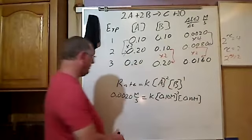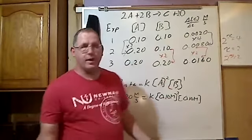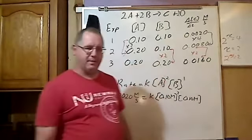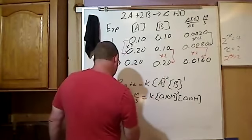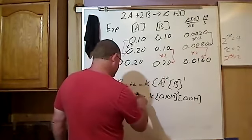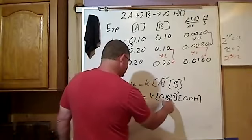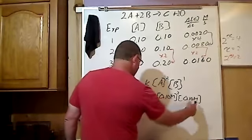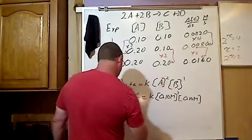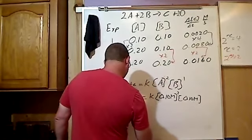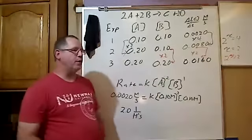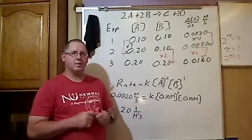And I end up with a value, you can double check me on your calculator. So if I mess up on the math, oh well. This ends up being 2.0. Now, this is molar per second. This is divided by molar times molar times molar. 2.0, 1 over molar squared second.